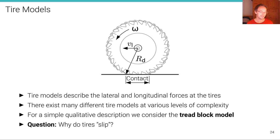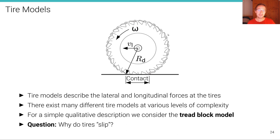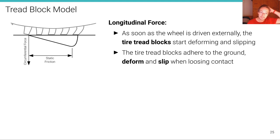The question we are trying to answer is: why do tires slip, how exactly do they slip, and how does this relate to the force applied at the tires? We're going to consider the tread block model. It's called that because the tire at the macroscopic level is composed of many little tread blocks — each a little piece of rubber attached to the tire. You can see only the bottom part of the tire here, with five of these tread blocks visible.